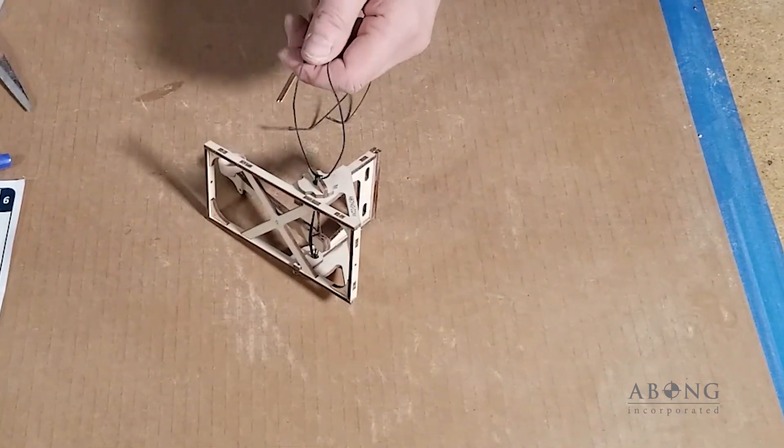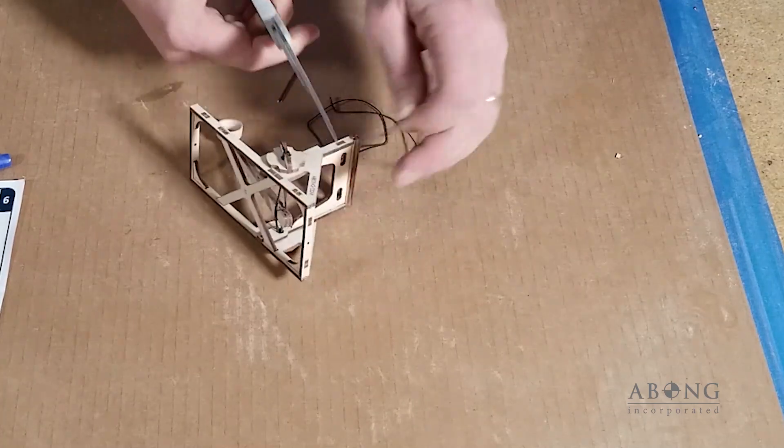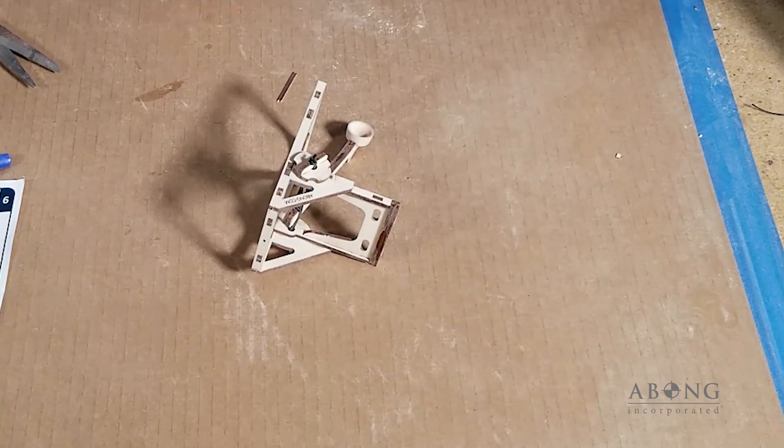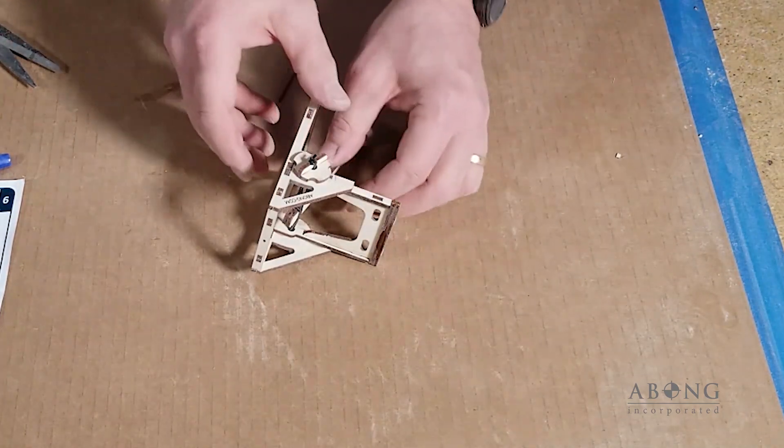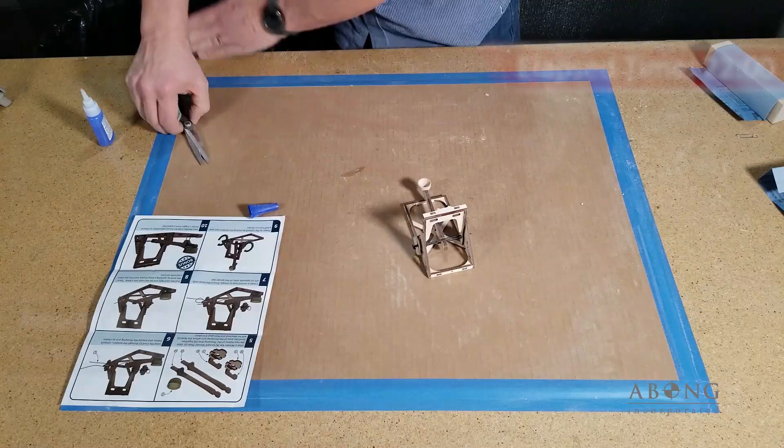And when you breathe on the super glue, actually the heat and the moisture from your breath actually kicks off the super glue and it makes it cure faster. Little tip for you. Alright. So now we have the catapult is basically done. All we need to do now is wind it up.